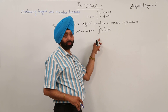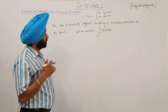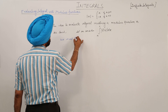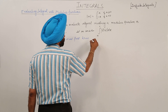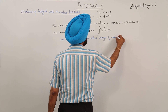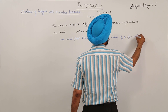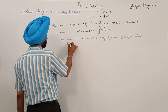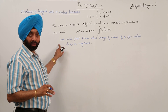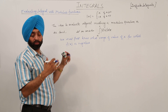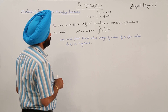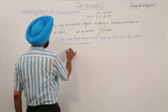Suppose we have the integration of a modulus function with limits from a to c. The most important thing we must first know is what range of values of x makes f(x) negative.